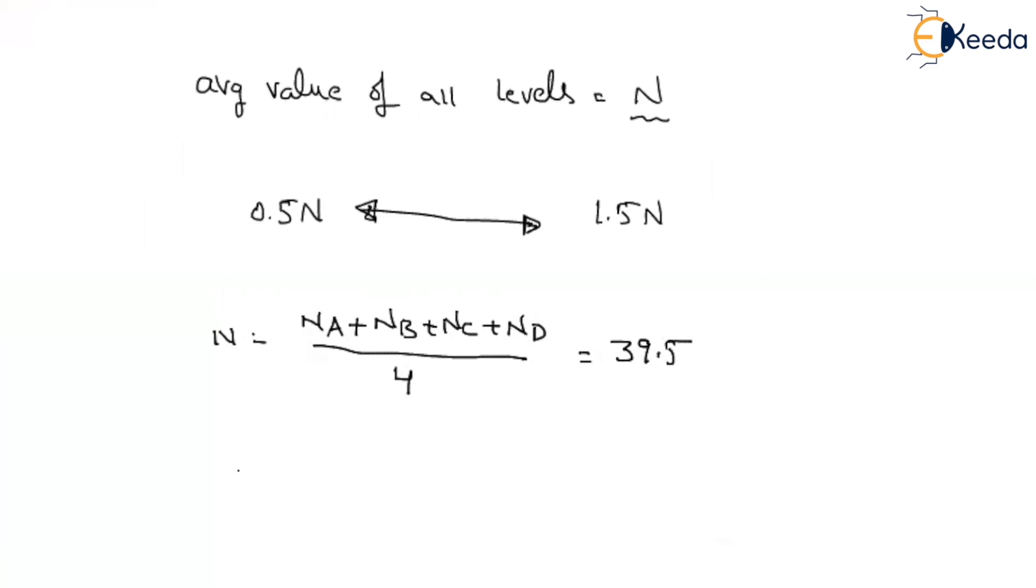Now, let us see the values. What is the range? What is less than 50%? That means 0.5 times N. What is N? 39.5. So how much we will get here? That will be equal to 0.5 into 39.5, which equals 19.75. This is the minimum limit.